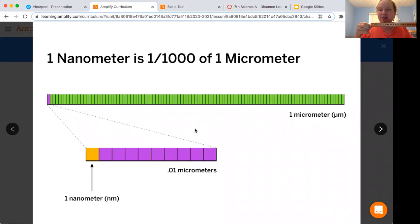And then in that micrometer, there's one thousand nanometers. So we're talking about super tiny, minuscule, very, very tiny. So a molecule is tinier even than a nanometer.